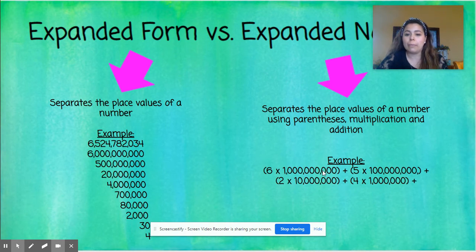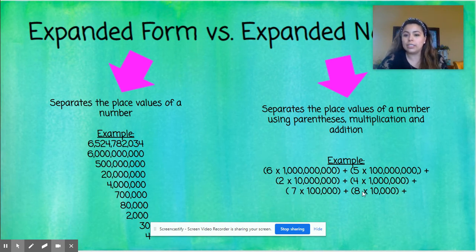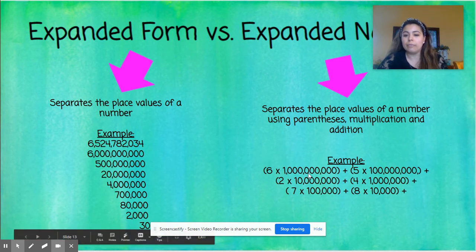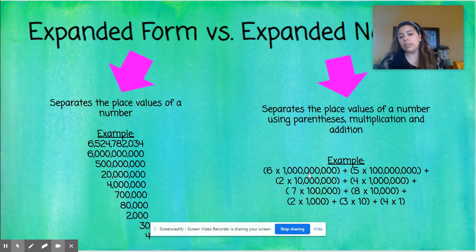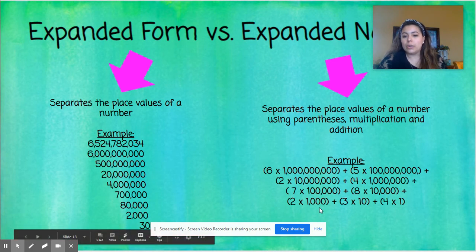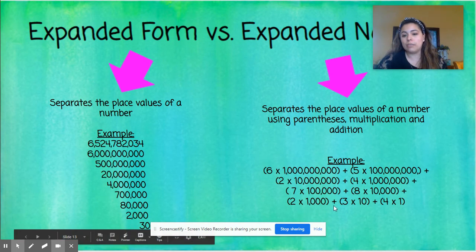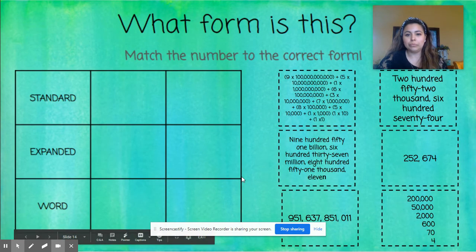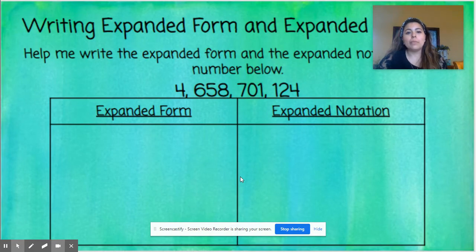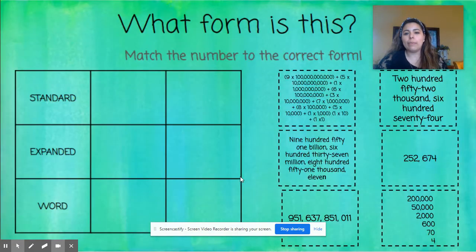Continuing: seven times one hundred thousand because the seven is in the hundred thousands place, and eight times ten thousand for the ten thousands place. Then two times one thousand, plus three times ten, plus four times one. There is nothing in the hundreds place, so I would not put zero times one hundred — I don't put anything for the hundreds place. So in this case we go from thousands down to tens to ones.